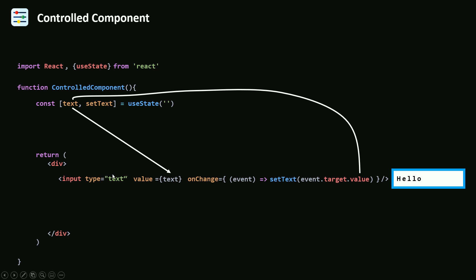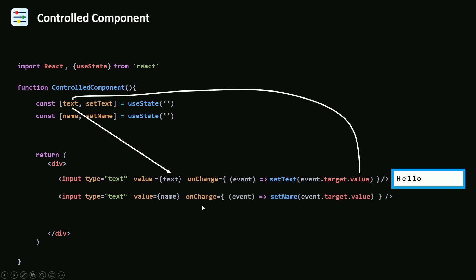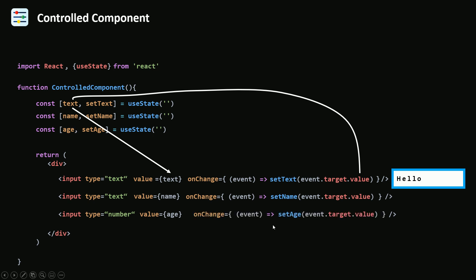Why do we need a controlled component in React? Because we need a single source of truth. I'm 100% sure that the value of this input is the same as the value of text. Whenever I want to add an input to my React component, I create a state — for example name — set the value to that variable, and always add an onChange event that uses setName to update the value. Same pattern for age: set value to age, change it with setAge whenever the input changes.